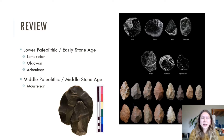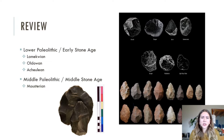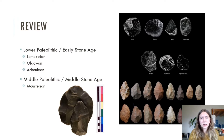This takes us into the Middle Paleolithic or the Middle Stone Age. The most common industry here is the Mousterian, usually associated with Neanderthals but in some cases associated with early humans or Cro-Magnons. It is classed as mode three because of the switch to prepared core techniques such as the Levallois, which we've discussed previously.